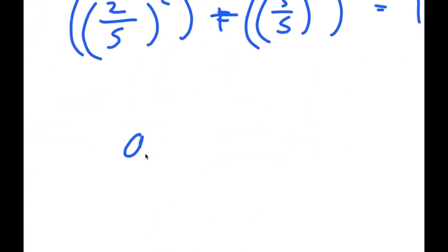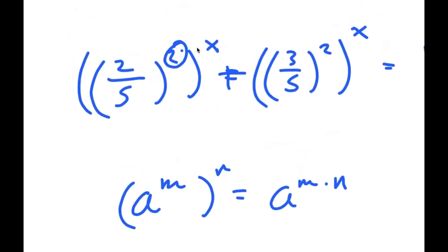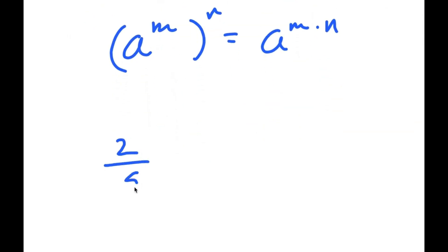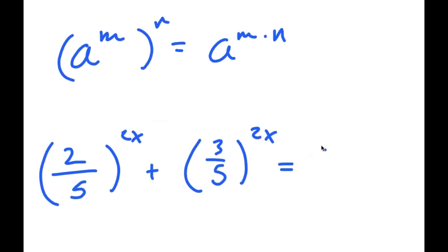From here, if I have something in the form a to the power of m to the power of n, this is equal to a to the power of m times n. So the 2 and x multiply, giving me 2 over 5 to the power of 2x, plus 3 over 5 to the power of 2x, is equal to 1.